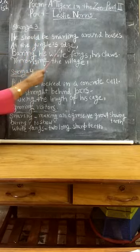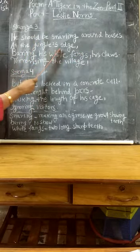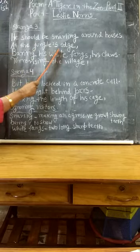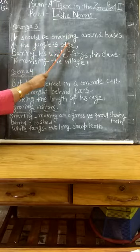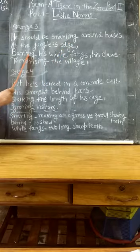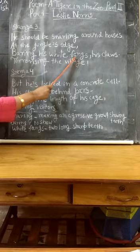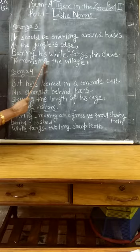He should be snarling around houses at the jungle's edge. Snarling means making an aggressive growl, showing teeth. At the jungle's edge, bearing — meaning to expose — to show his white fence, meaning two long sharp teeth. Terrorizing means creating fear.